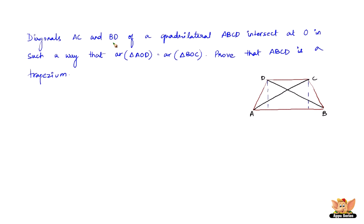In this problem, diagonals AC and BD of a quadrilateral ABCD intersect at O in such a way that the area of triangle AOD equals the area of triangle BOC. We need to prove that ABCD is a trapezium. We draw DN perpendicular to AB and CM perpendicular to AB.